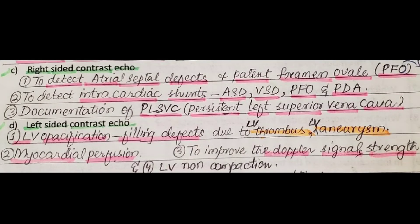The right-sided contrast echo is used to detect atrial septal defects (ASD) and patent foramen ovale (PFO), which is a hole in the inter-atrial septum (IAS), and to detect intracardiac shunts including ASD, VSD, PFO, and PDA.